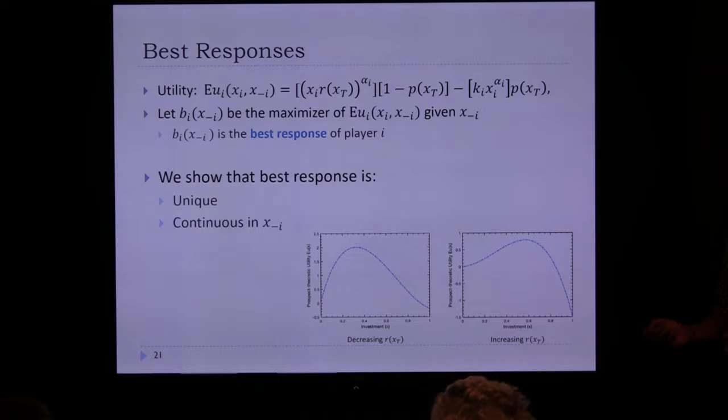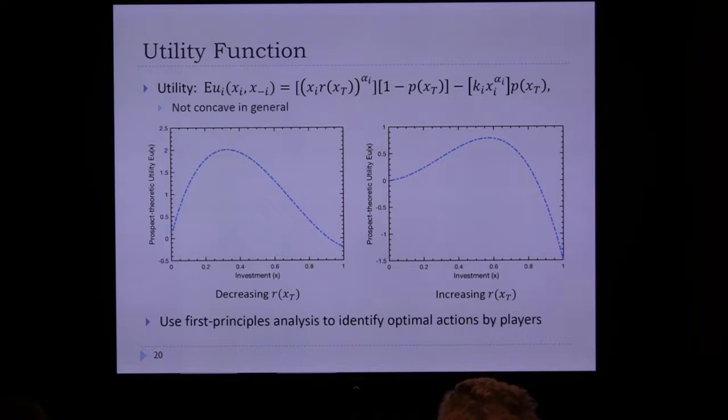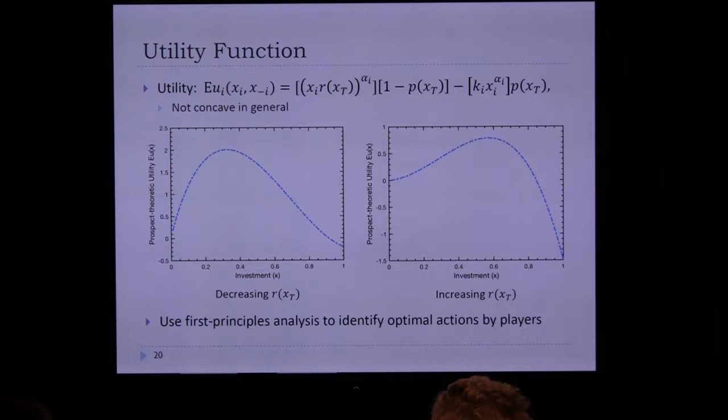If R is flat — you don't know whether it's increasing or decreasing — the analysis still holds since a constant R is a special case of both scenarios. The equilibrium won't necessarily be at 0.5; it will depend on the failure probability function. It comes out as a special case of the existing framework.